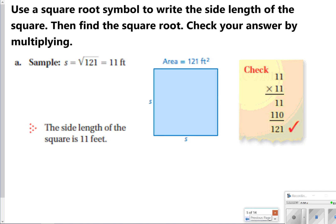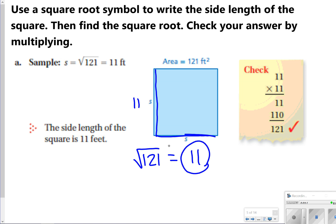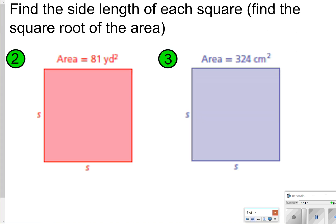This sample is a square, and if the area is 121, that means both sides being multiplied together should equal 121, and that's the same thing as finding the square root of 121. I know that 11 times 11 is 121, so each side would be 11 feet long. Here are two that you are going to try. Number two is probably going to be a little bit easier; number three might take a little bit of work. Go ahead and pause the video and see if you can find the side lengths or the square root of each of those areas.